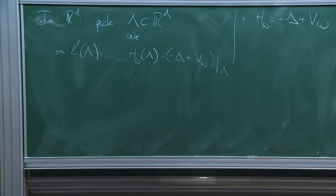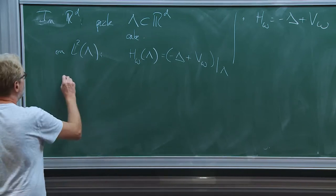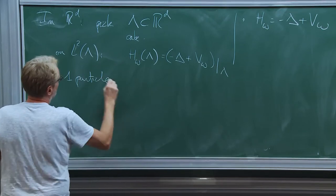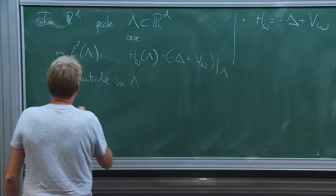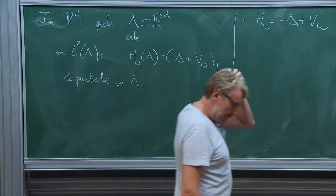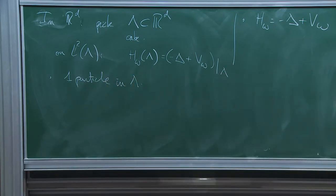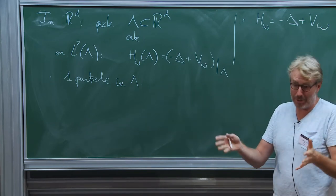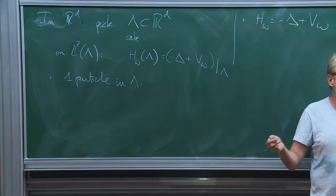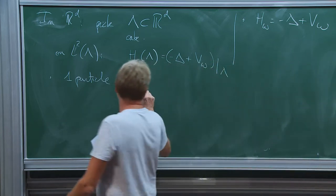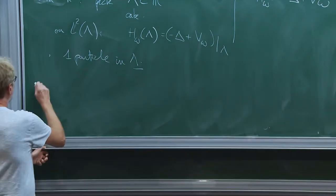Well, that's a single particle, right? This is one particle in the box lambda. But of course, as you all know, in nature, particles do not come alone. You cannot — or you can, but it's hard work — isolate a particle, but it's even very difficult, if you think of electrons, to isolate them. So usually what you should look at is many particles.